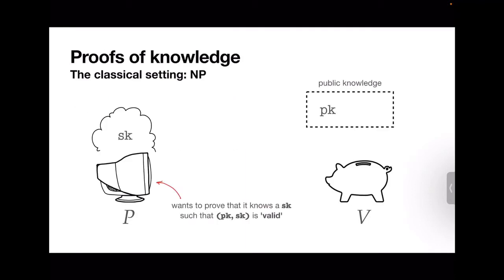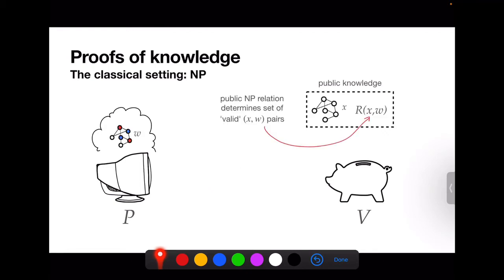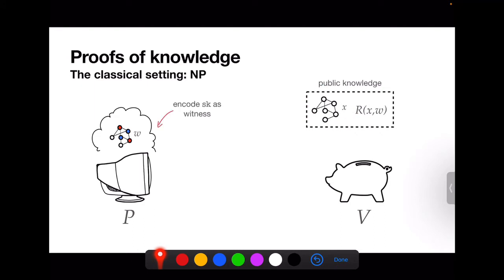Here's the canonical setup in the classical setting. There is a prover P who wants to prove to verifier V that it knows a secret key, given some publicly known public encryption key pk, such that the pair (pk, sk) is valid. The answer usually is that there's a public NP relation R which takes in instance-witness pairs and checks that the witness w is indeed a witness for the instance x.